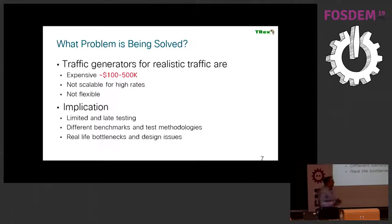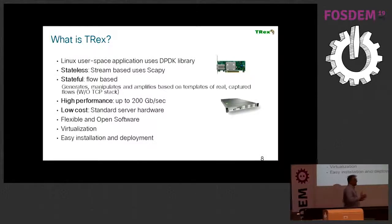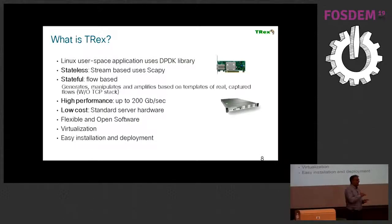Because of that, we need to generate realistic traffic. The problem is that realistic traffic is really expensive, like 500K for 50 gig or 100 gig, and it's not flexible. This is the reason we open sourced this. So what is TRex? TRex is a software, an application, a Linux application. It sits on top of DPDK.